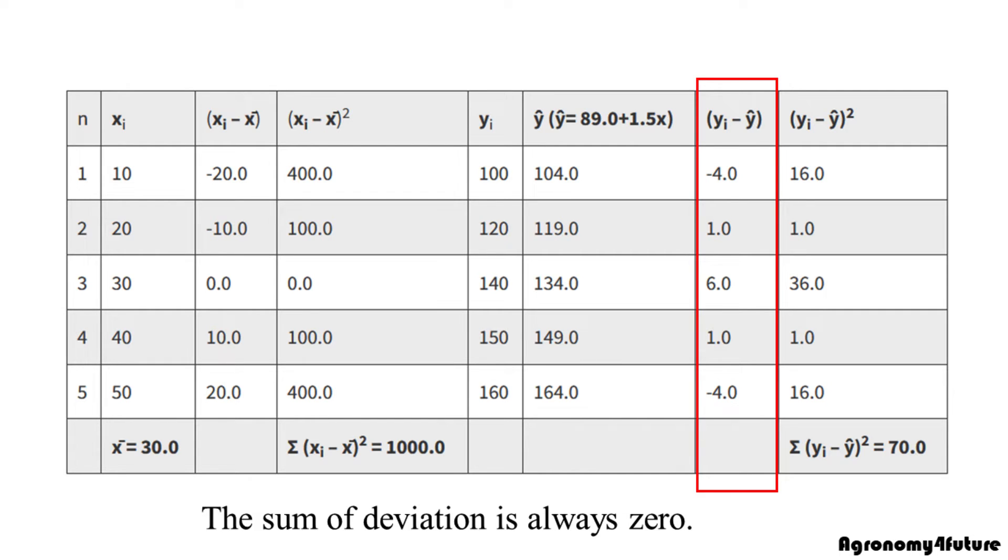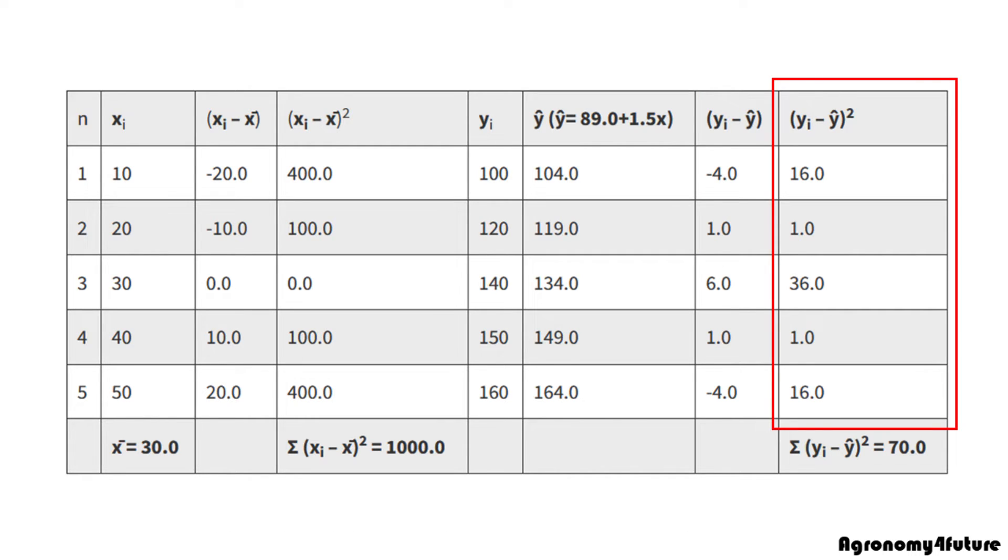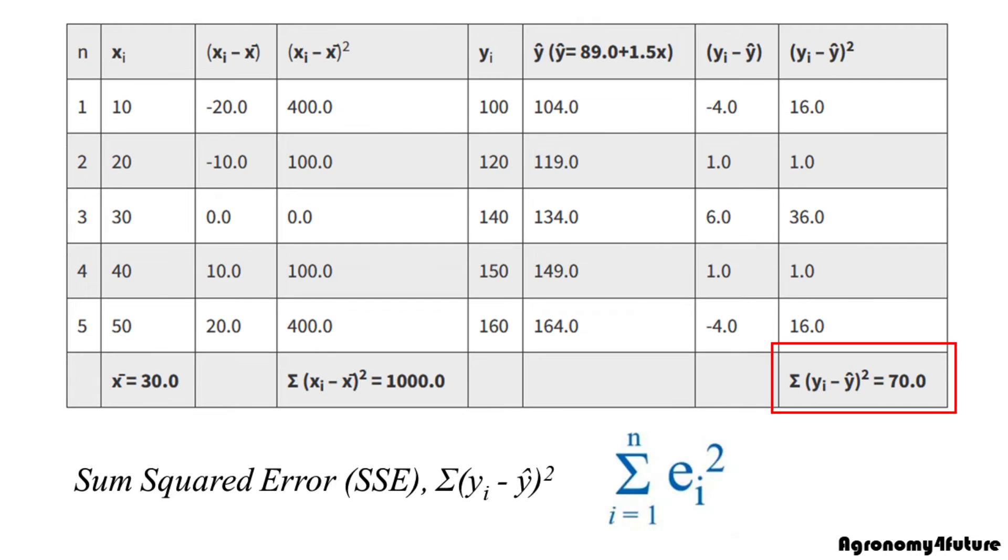The sum of deviation is always zero. To avoid the sum of deviation becoming zero, let's square each deviation. Finally, let's add up all squared values. This is sum of squared. In this case, it is called sum of squared error.